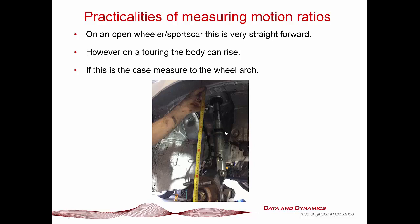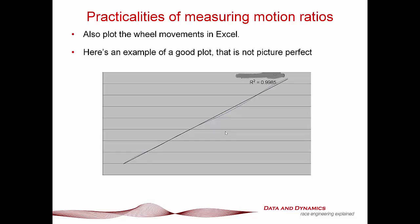In terms of practicalities of measuring motion ratios, as we discussed before, plot the wheel movements in Excel. Here's an example of a good plot, but it's not necessarily perfect. Obviously because this is being used by a live customer, I had to redact out what the motion ratios are. But as you can see here, the initial points, the agreement and the curve fit is actually quite good. You'll notice here and here we didn't quite do a perfect job of measuring it up, which is why this sort of illustrates the point that you take as many points as you can get your hands on. That way you get to see a good consistent average.